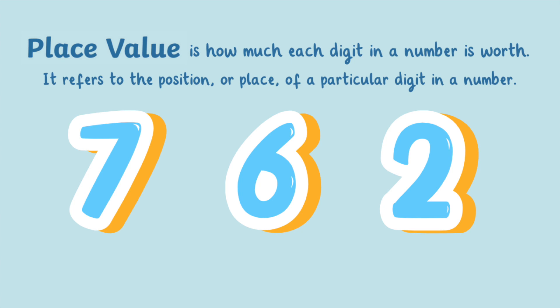If you swap the digits around, their place value changes. For example, the number 762 is made of the same three digits, but they each have a different value now.